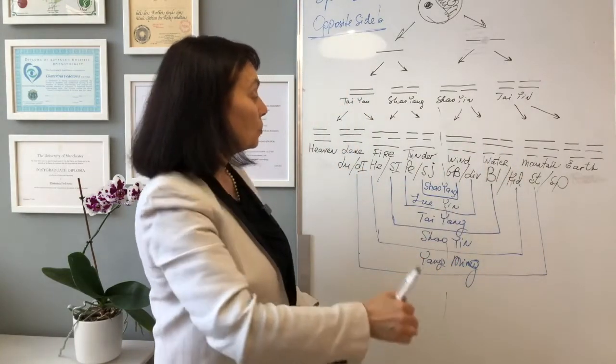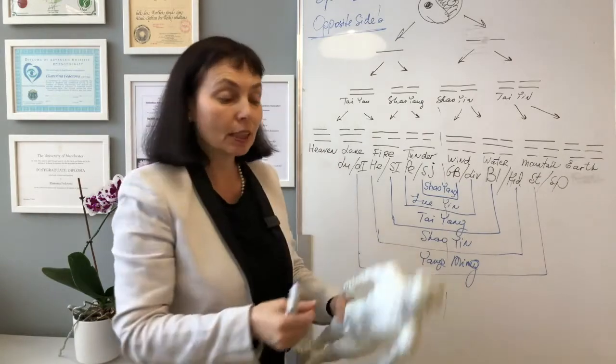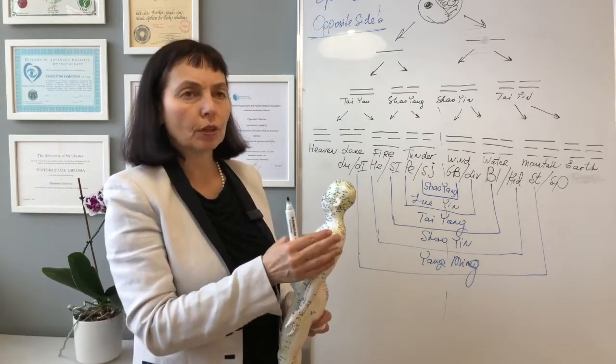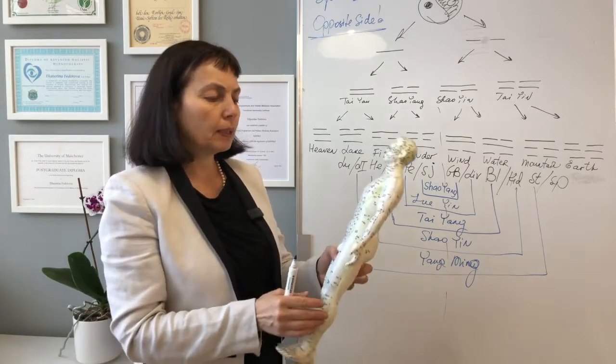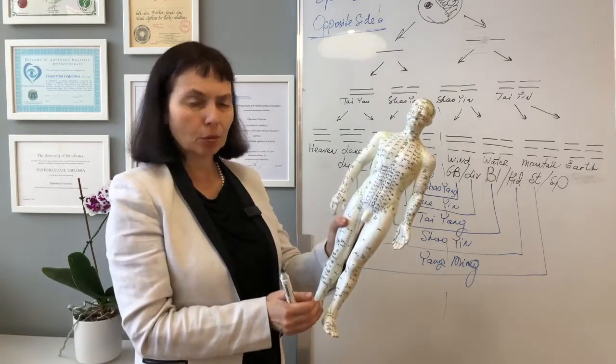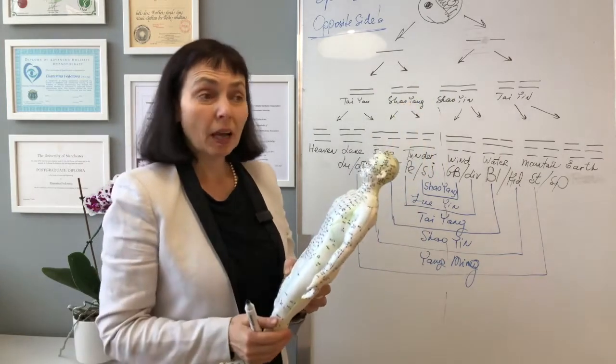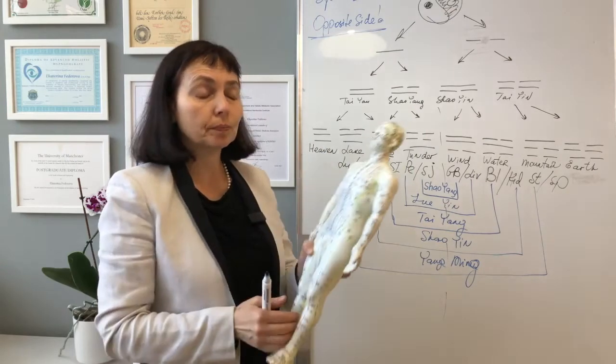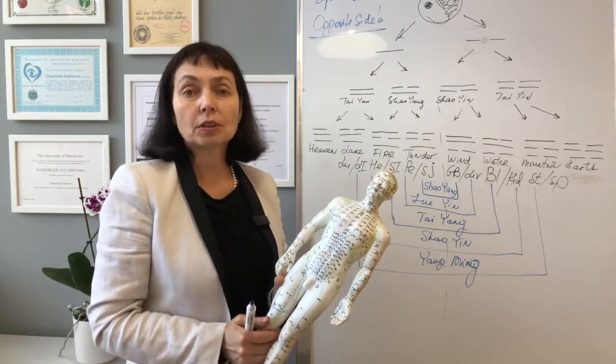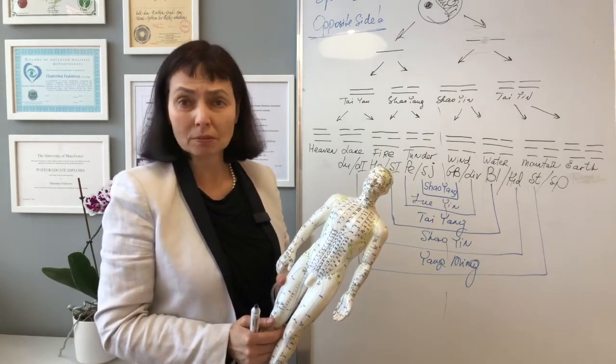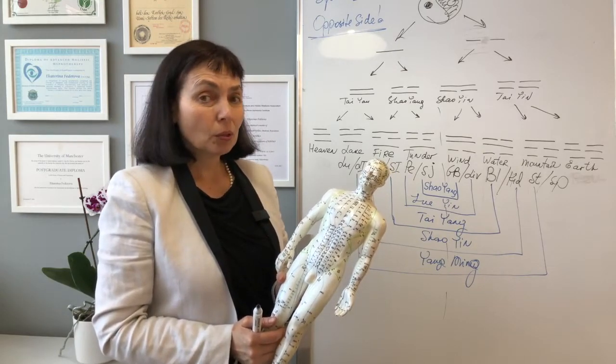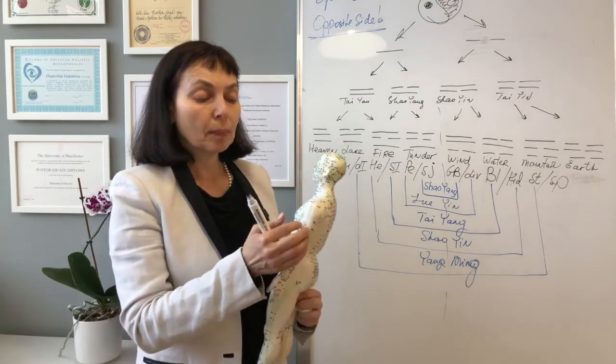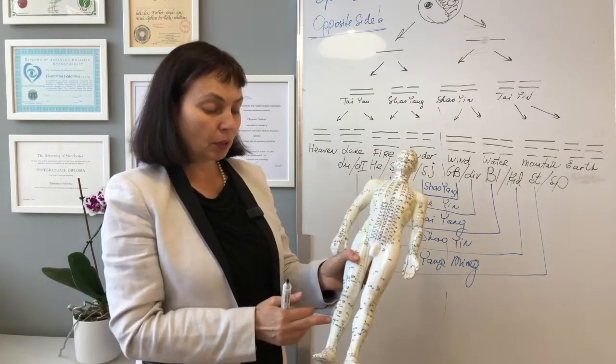And stomach meridian will balance everything on large intestine. Somewhere in the box you can find the pains around the shoulder on the arm will be balanced by needling stomach 38. You possibly remember it. And I had a patient with the pain on the shoulder. And I needle stomach 38. It didn't work. So what do you think? Which pains